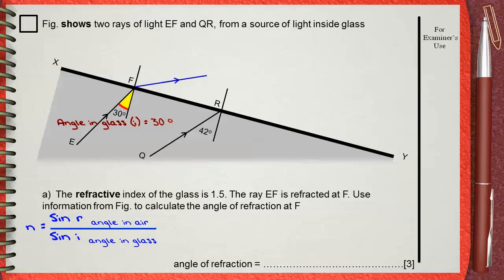Our angle of incidence in glass is 30. The angle in air is the angle of refraction, and this is what he wants you to calculate in this question.